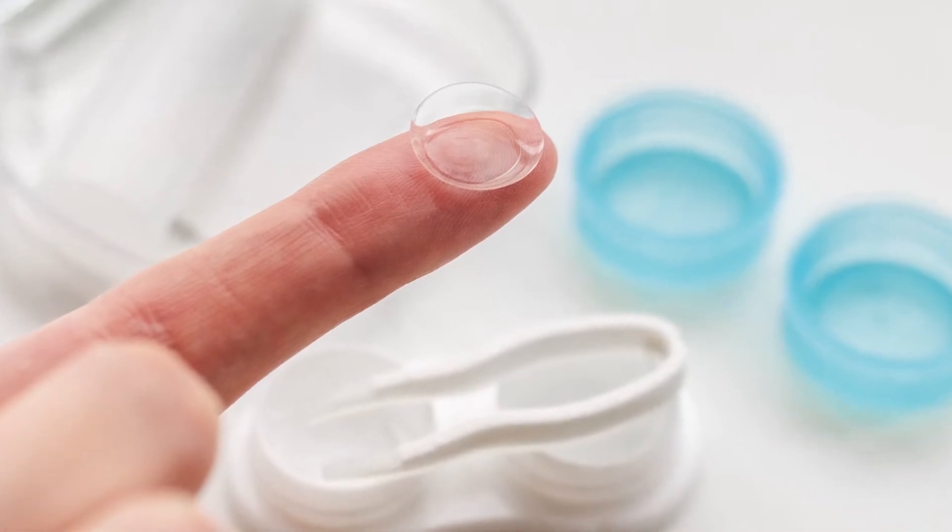Some people can't do multifocal contacts. There's a different kind of contact lens you can do where one eye is only for distance and the other eye is only for up-close. That's called monovision. You have to train your brain to be able to switch back and forth between the eyes. But people that do that love it.